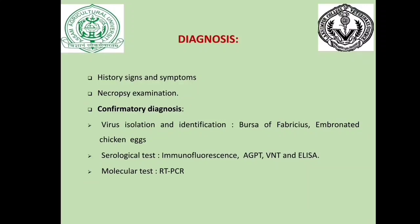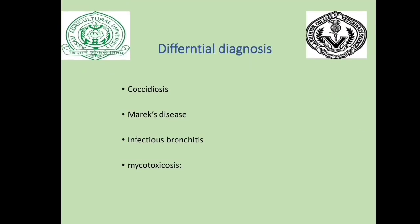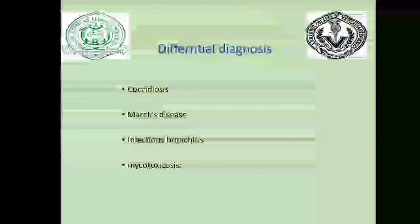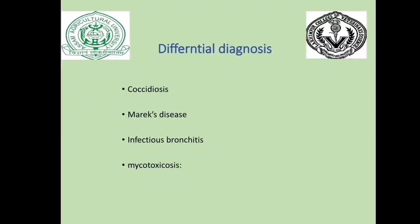Molecular tests like reverse transcription PCR can also be done. For differential diagnosis, IBD must be differentiated from coccidiosis (which has sudden death and blood droppings but no bursal lesion), Marek's disease (which has bursal atrophy but prominent nerve lesions and tumor formation), infectious bronchitis (distinguished by the specific bursal lesions of IBD from the nephrogenic form), and mycotoxicosis (which also shows bursal atrophy).